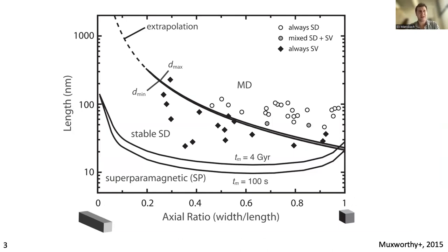This is the typical view of how domain states change as we increase grain size: starting from superparamagnetic, moving into single domain, single vortex, and finally some type of multidomain state — as seen for common paleomagnetic recorders like chamosite and magnetite. I'm showing results of micromagnetic modeling from Muxworthy et al. 2015 on what's called the Butler-Banerjee diagram, where we have length on the y-axis versus axial ratio on the x-axis. One is essentially a cube, and zero is like a very elongated wire.